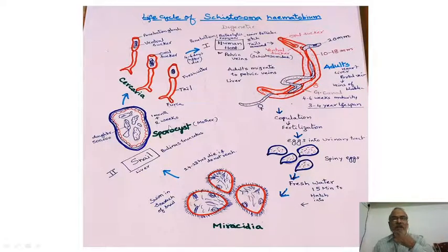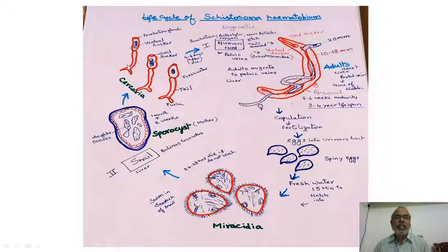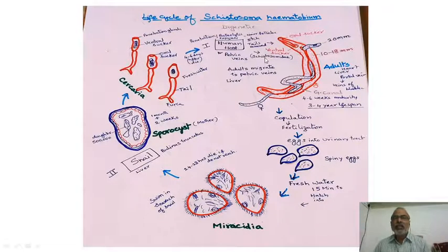Within two weeks, the mother sporocyst starts producing daughter sporocysts, and after one month it transforms into the next stage — the third stage larva called the cercaria. The cercaria has a characteristic forked tail and freely swims in fresh water. It has penetration glands, oral suckers, and ventral suckers. The cercaria resembles a miniature schistosomulum in structure.